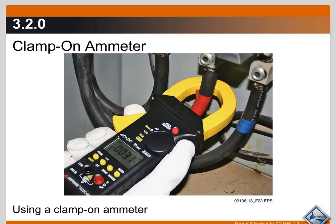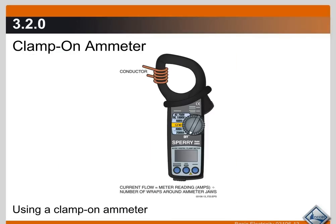You just clamp it around one wire — if there's a bundle, you can't clamp the bundle; you have to clamp just one wire. For smaller amp draws where you want a more accurate reading, you can wrap the wire around the jaws of the clamp-on ammeter. Five turns will multiply the measured current by five; ten turns multiplies it by ten. This improves accuracy when you get down into lower amp and voltage ranges where accuracy starts to fall off.